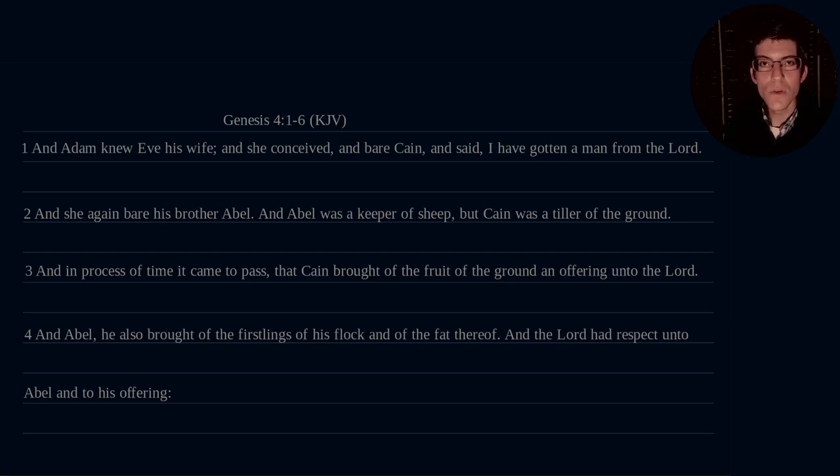Hello, everybody! In today's drill, we will be going through Genesis chapter 4 verses 1 through 6. Genesis chapter 4 verses 1 through 6, King James Version. Let's go ahead and get into it. Genesis 4, 1 through 6, King James Version.